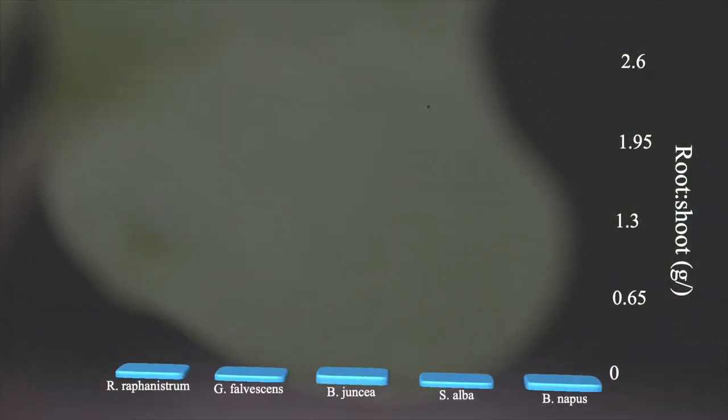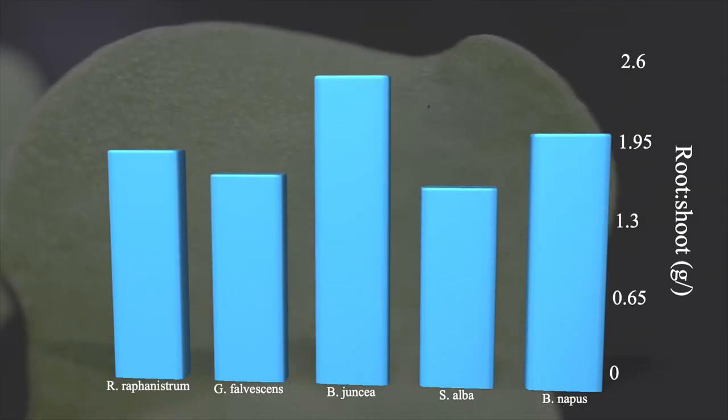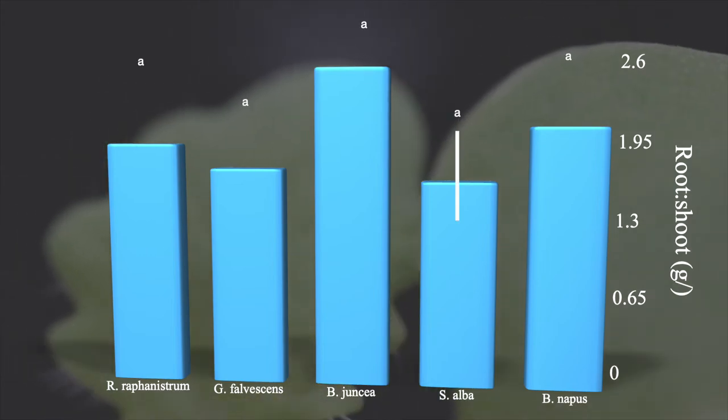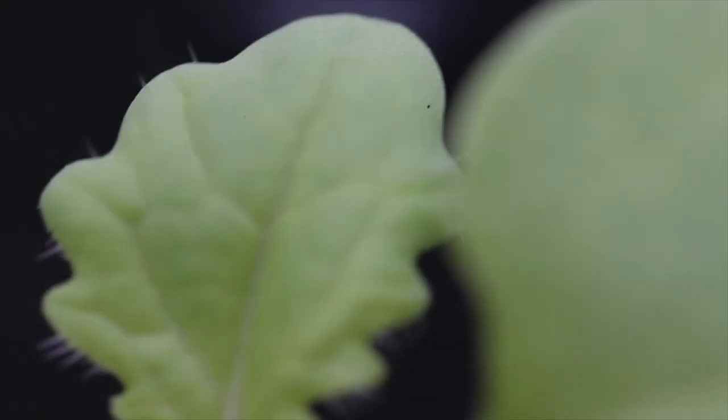While there are some differences between surrogates and wild radish at later leaf stages, there were no significant differences at the first leaf stage, that is, when the first true leaf is fully unfurled, which happens to be when physical weed control is most effective. We also saw this pattern for root length and root surface area.